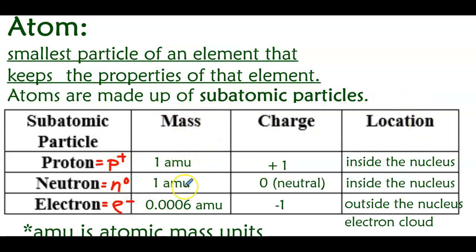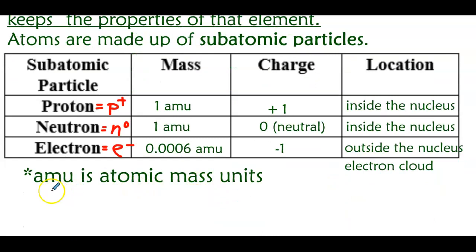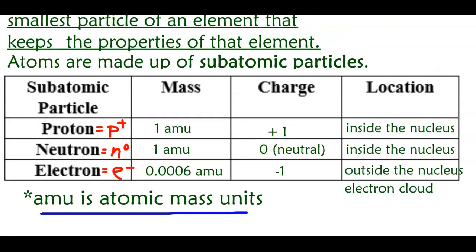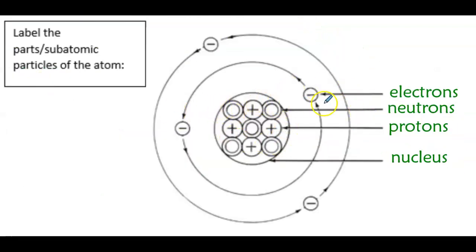Protons and neutrons both have a mass of one AMU, and they are both inside the nucleus. They are only different by their charge — protons have a positive charge, and neutrons have no charge, they are neutral. Then there are electrons, which are outside the nucleus in an electron cloud. They have a really tiny mass compared to protons and neutrons: 0.0006 AMU. AMU stands for atomic mass unit, basically means weight. The charge of an electron is negative one. You should be able to label a diagram: the electrons are out here, the neutrons and protons are inside, and this whole thing is the nucleus.